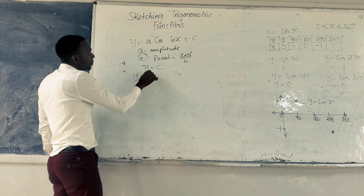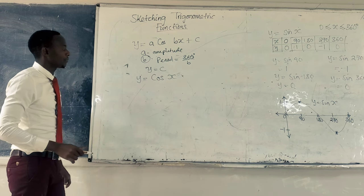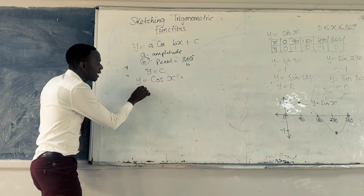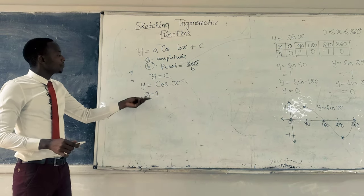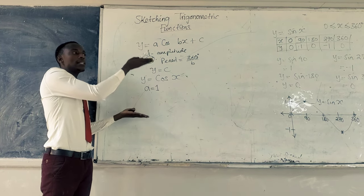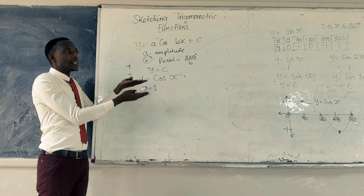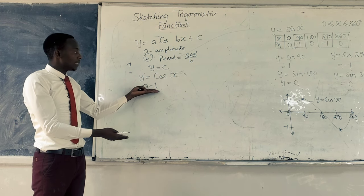Now let us take a look at Y equals cos X. From this function, we are able to show that A equals 1. So it means when we sketch this function, it will be going as high as 1, like a distance of 1. And also, another distance downward, it should be also 1. That's what this means.